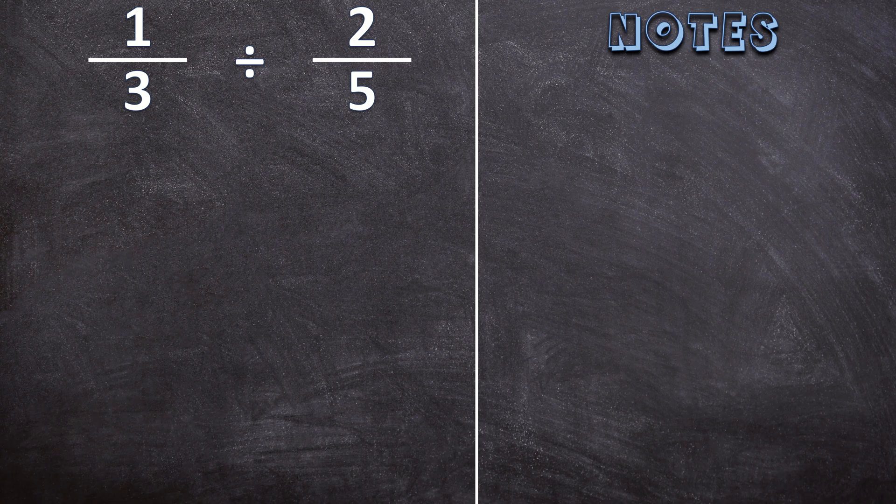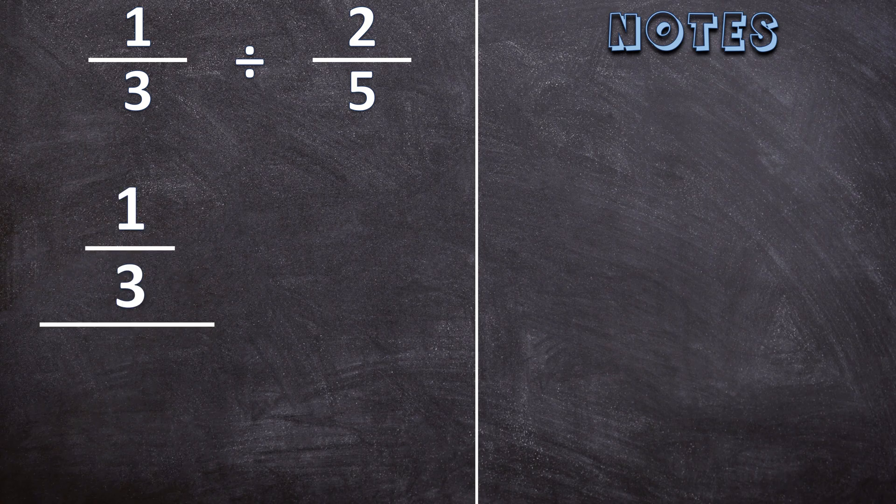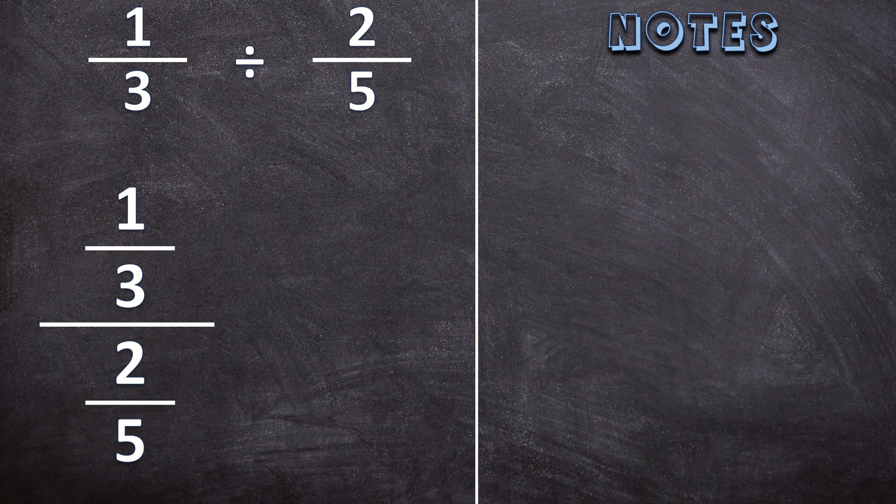So first off we can write the 1 over 3 divided by 2 over 5 as a bigger fraction - so 1 third over 2 fifths. Now I know that this part looks complicated. This fraction is called a complex fraction. So when there's a fraction in the numerator or a fraction in the denominator or both, we call it a complex fraction.